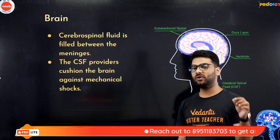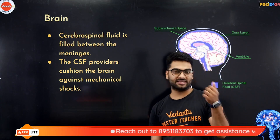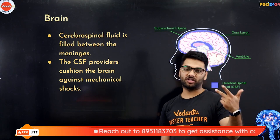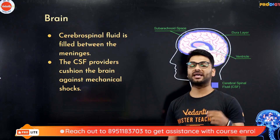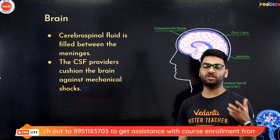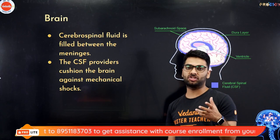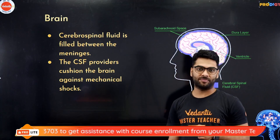Any injury to the meninges — the pia, arachnoid and dura mater — is called meningitis. It is a condition where one of the meninges swells or there is some kind of damage to them.